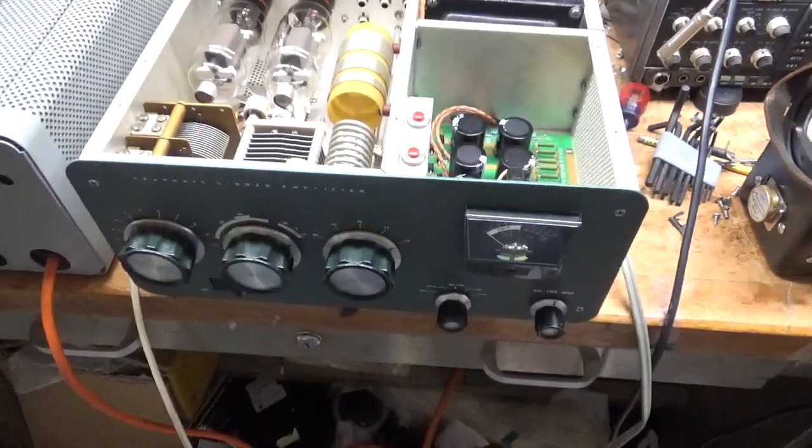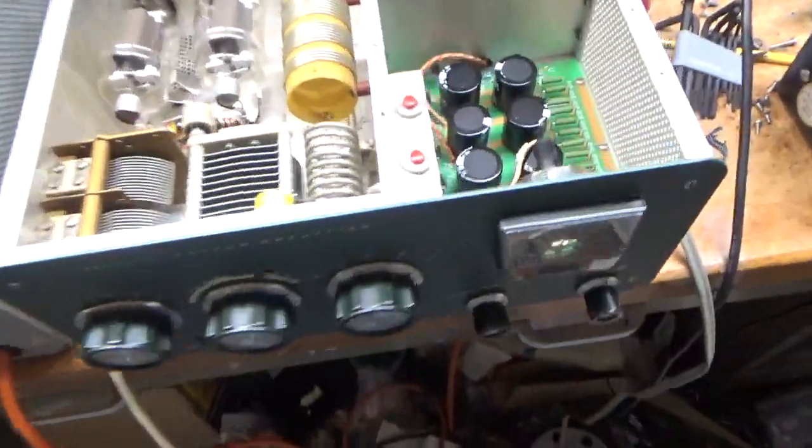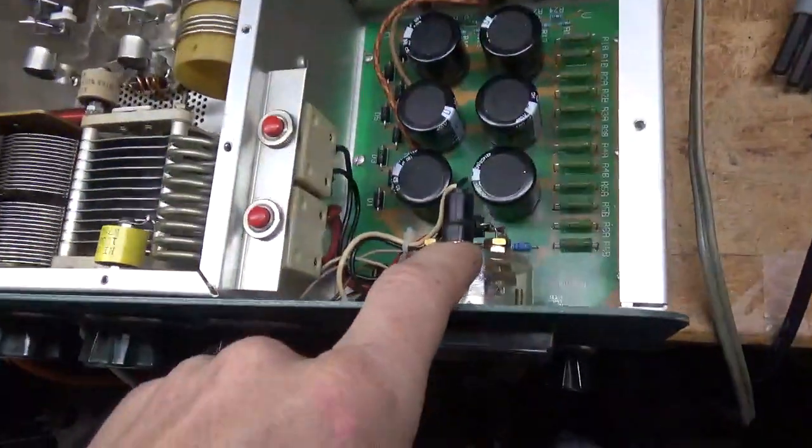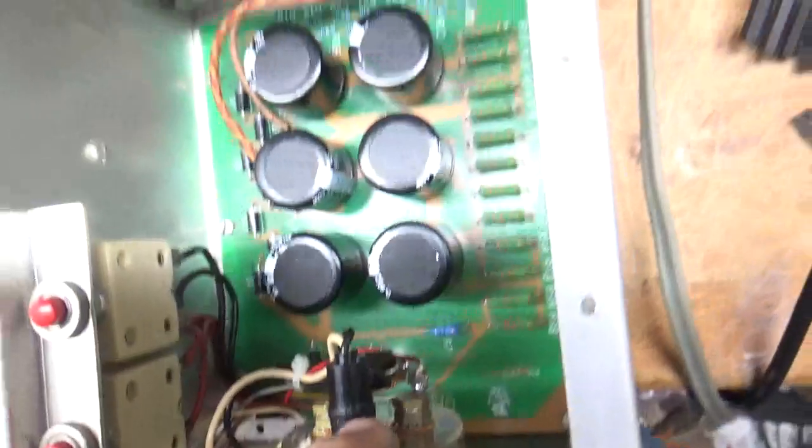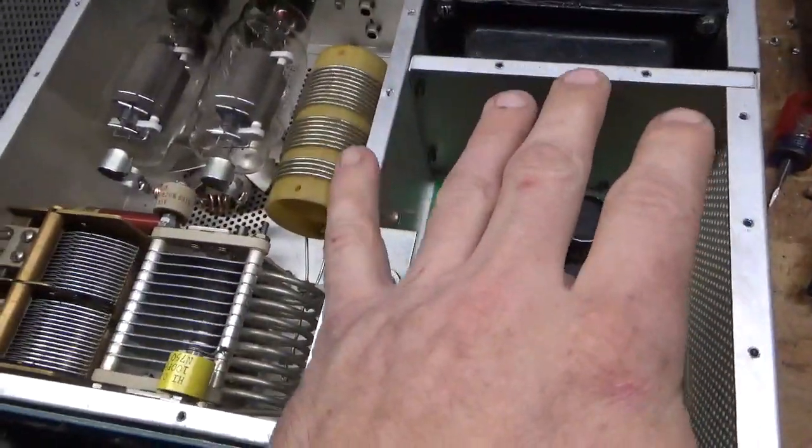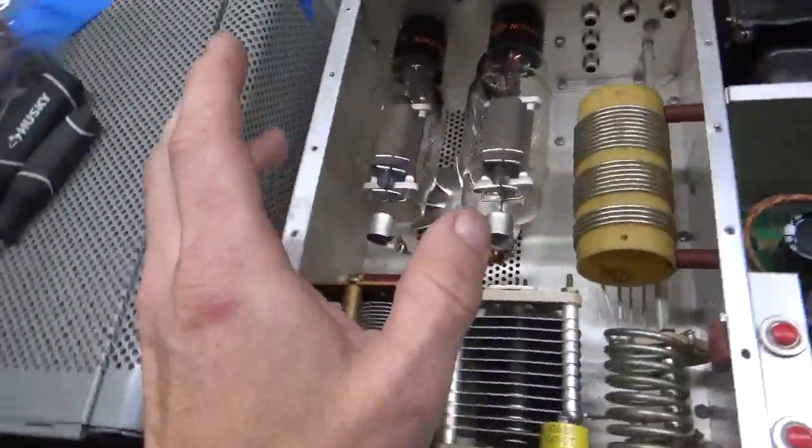Okay, I'm back with the completed amplifier. Went ahead and changed the meter lamp bulb, put diodes across the meter movement, reverse connected. Already had the Harbach filter cap board kit. Cetron tubes are in here.